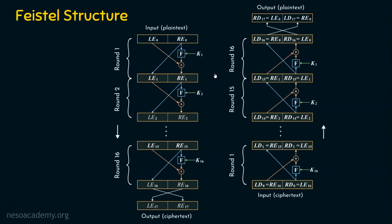What we expect from the Feistel structure is the ciphertext with the two properties Claude Shannon introduced: confusion and diffusion. Any encryption algorithm containing confusion and diffusion will be stronger. Inside function f, two important operations are carried out — substitution and permutation — which are responsible for confusion and diffusion respectively. This function ensures the ciphertext has both confusion and diffusion properties.